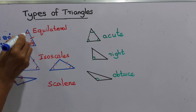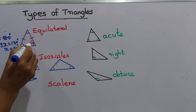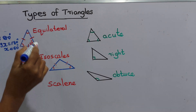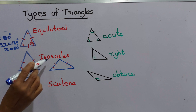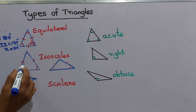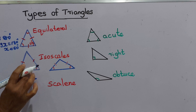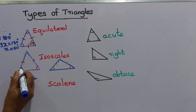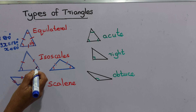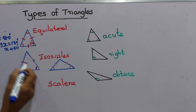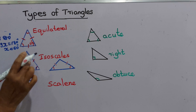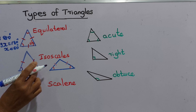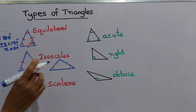So each angle in an equilateral triangle has a value of 60 degrees. Next we have the isosceles triangle. In an isosceles triangle, only two sides are equal in length. The two equal sides are the legs, and the remaining side is the base. The base angles of these two equal sides are also equal.